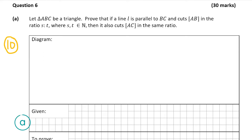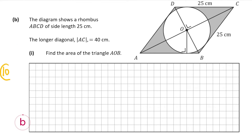Now we're going to move on to part B of the question, and B part 1 is worth 10 marks. The diagram shows a rhombus of side length 25 centimeters. The longer diagonal AC is equal to 40 centimeters, and we have to work out the area of triangle AOB.